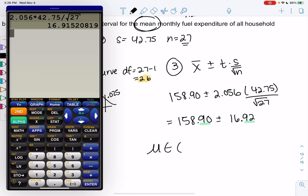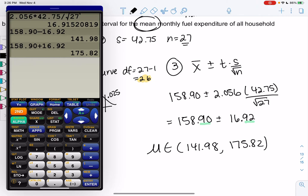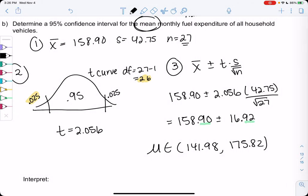The mean will be in the interval of 158.9 minus 16.92, which is 141.98, up to 175.82. So the mean is somewhere between 141.98 and 175.82. Let's interpret that.